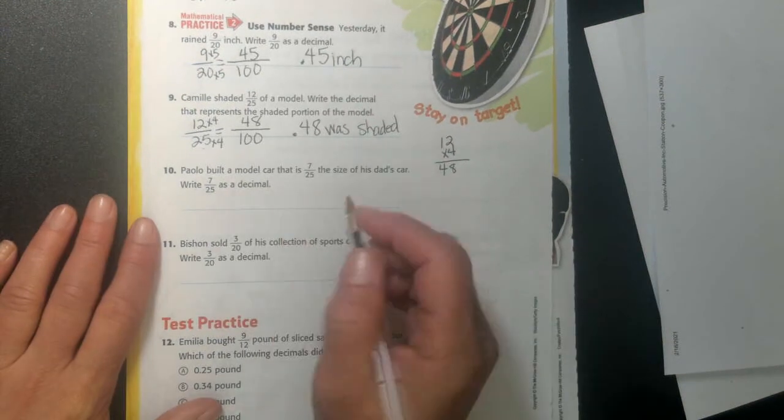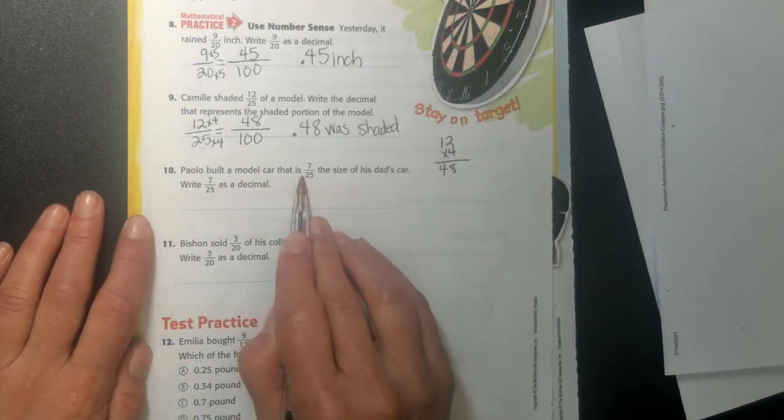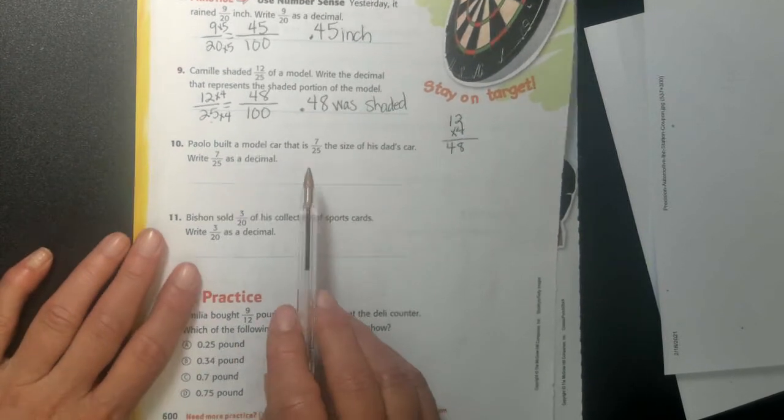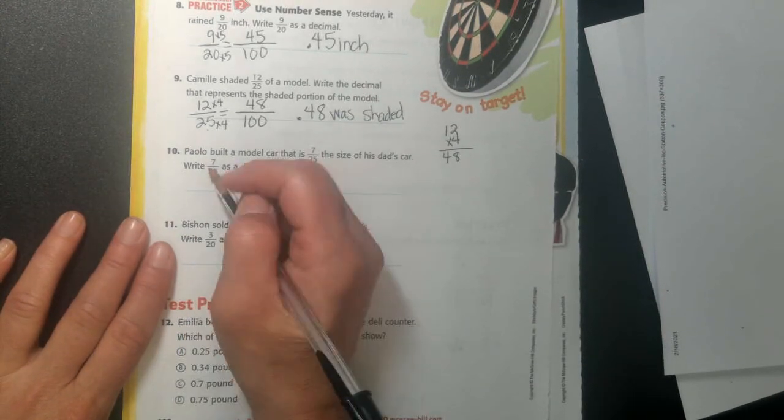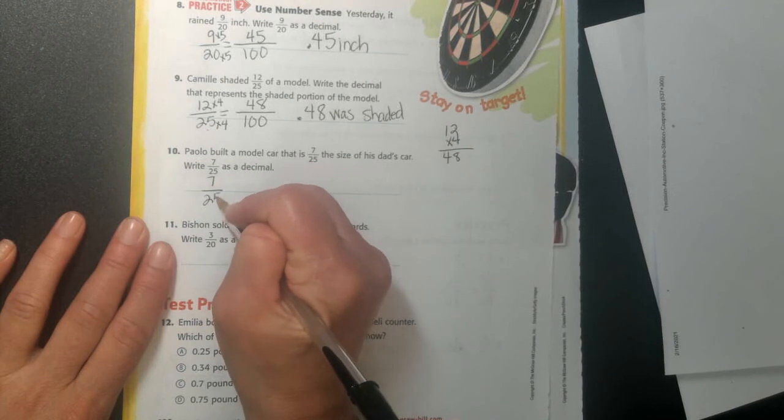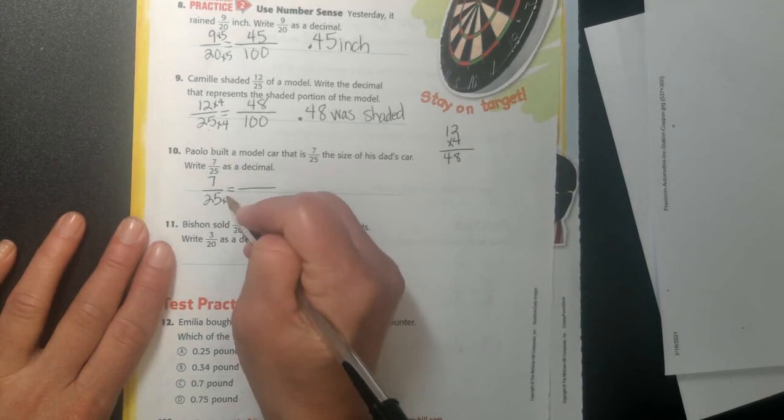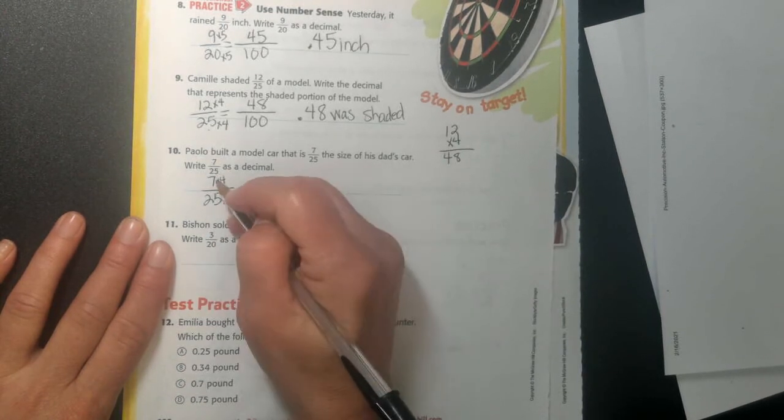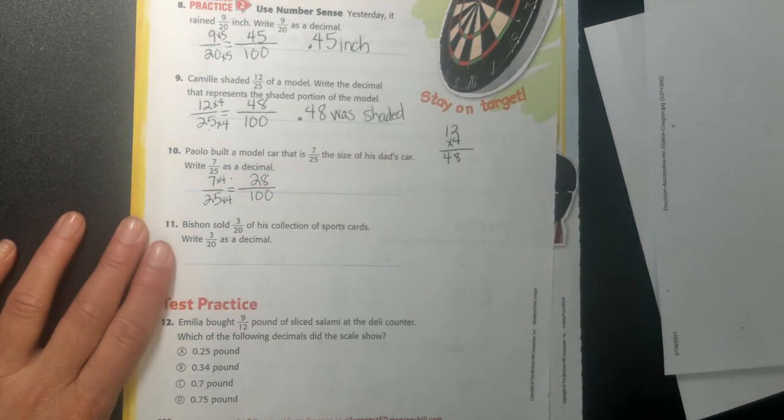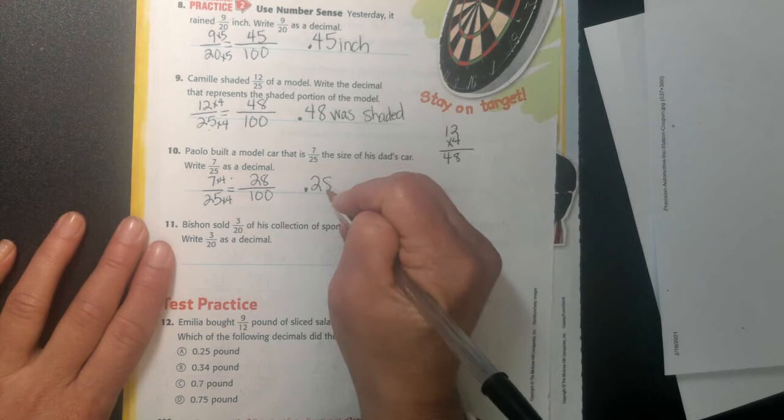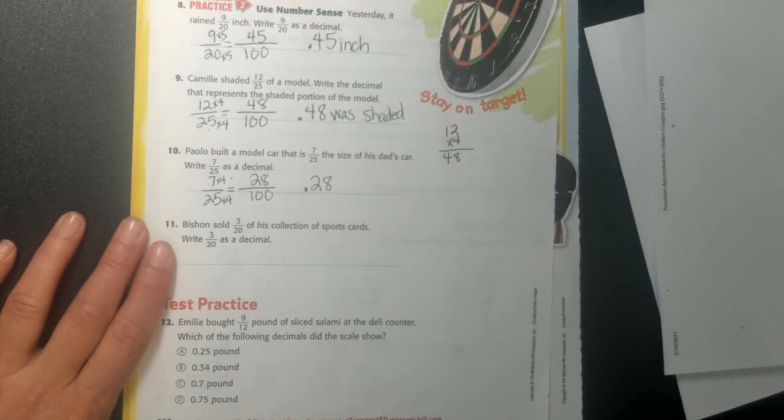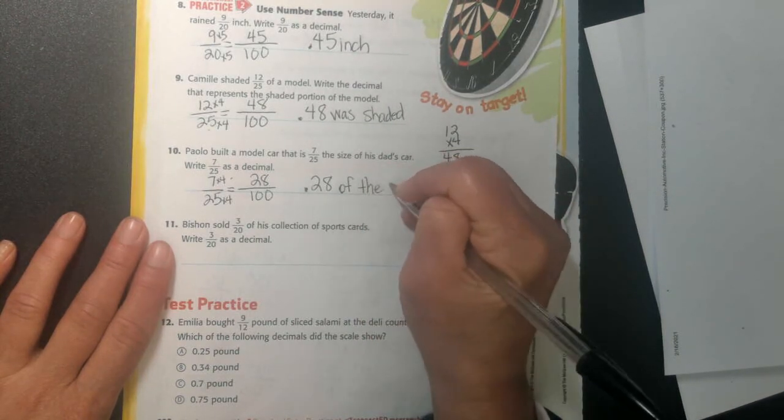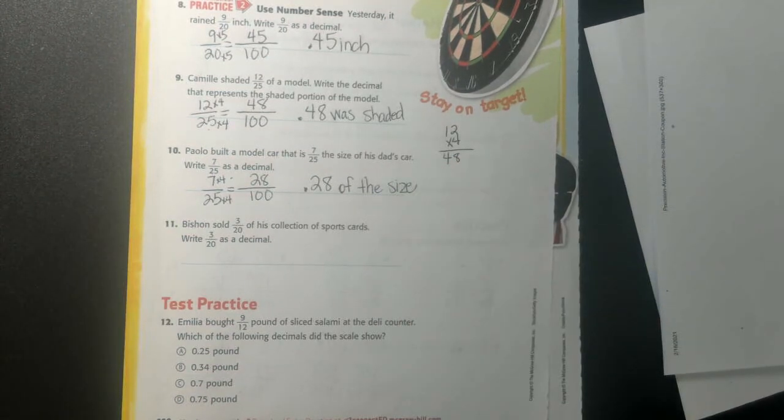Alright, so my next one. Paolo built a model car that is 7 twenty-fifths the size of his dad's car. Right, it's a small little model, smaller than his dad's car. So write 7 twenty-fifths as a decimal. So I'm just going to do the same thing. 7 twenty-fifths. So multiply times 4, times 4. 25 times 4 is 100, and 7 times 4 is 28. So my answer is 0.28. It doesn't tell me inches. 28 hundredths of the size of his dad's car. I won't write all that, I'll just say of the size.